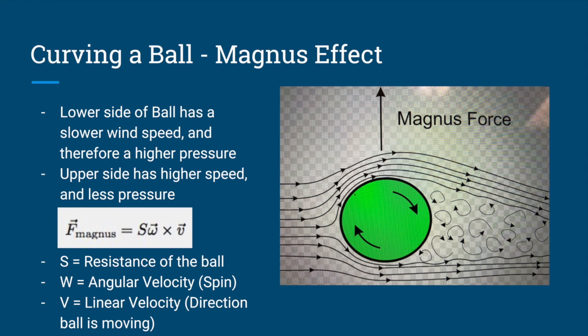If you take a look at the diagram on the right, you'll see a ball that is spinning clockwise. The lower side of the ball has a slower wind speed and therefore higher pressure because it's moving against the wind, and the upper side has a higher speed and less pressure because it's moving with the wind. Because the bottom has higher pressure and the top has lower pressure due to the Bernoulli effect, the ball moves up towards the side with less pressure. This is known as the Magnus effect, and the upward force is known as the Magnus force — you can see the equation for it on the left.